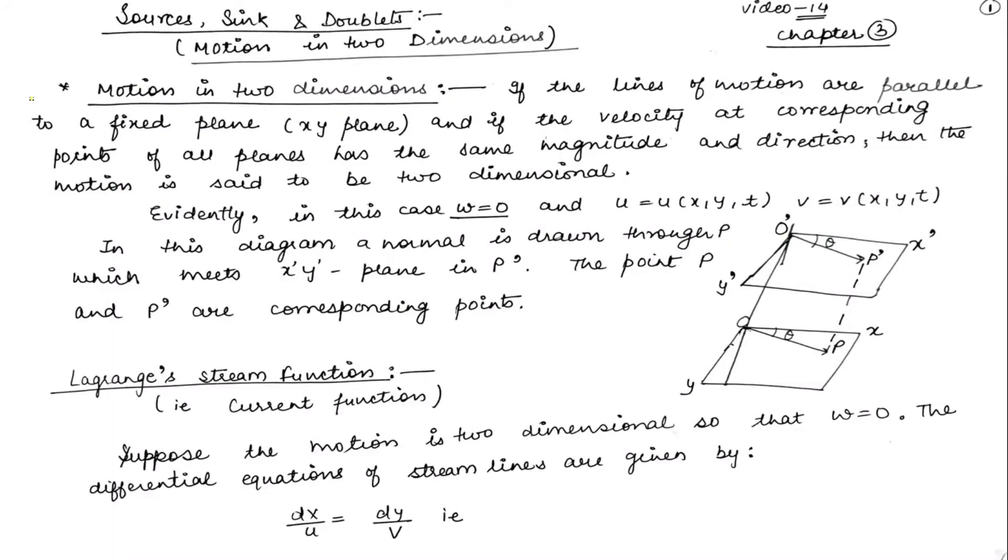Motion in two dimensions means we will do movement in two dimensions. So if the lines of motion are parallel to a fixed plane, xy plane, we will have two planes here and discuss motion on their behalf.